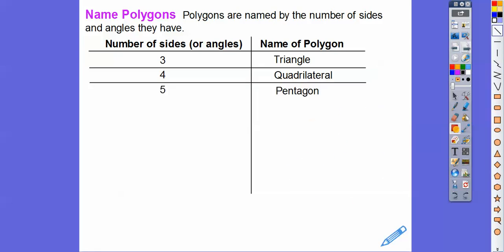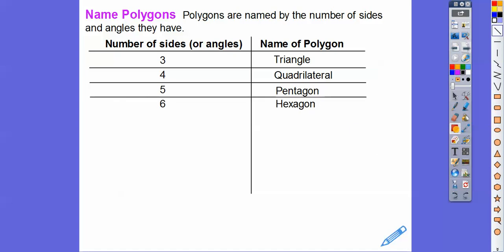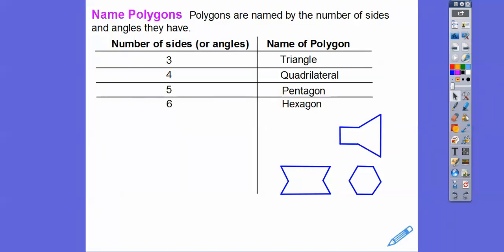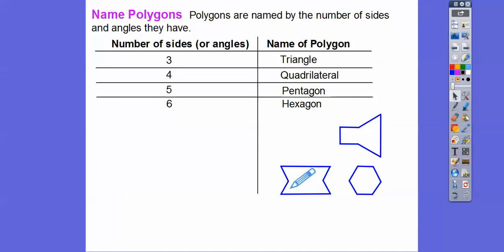Five sides are called pentagons — a closed shape made up of five segments. Six sides are called hexagons. Just count up the sides and that tells you what it is. If we didn't know, we'd start here and count: one, two, three, four, five, six — this has six sides, so it's a hexagon. Starting at the top: one, two, three, four, five, six — this is also a hexagon.